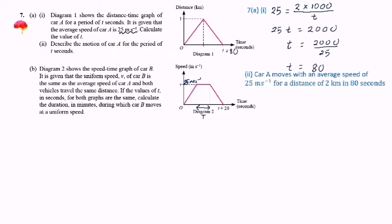So for this graph, T plus 20 equals 80 plus 20, which equals 100. Both vehicles travel the same distance, meaning the area under the graph equals 2 kilometres.